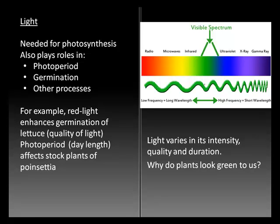Red light enhances germination of lettuce seeds, for instance. It's the quality of the light and the number of photons — the intensity — being absorbed into the leaves and used for photosynthesis, along with the photoperiod and day length. Day length is particularly manipulated in producing poinsettia plants, having them produce their colorful foliage just in time for Christmas.